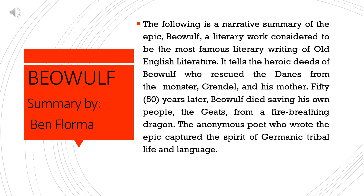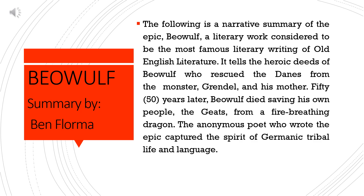Beowulf, Summary by Ben Plorma. The following is a narrative summary of the epic Beowulf, a literary work considered to be the most famous writing of Old English literature. It tells the heroic deeds of Beowulf, who rescued the Danes from the monster Grendel and his mother. Fifty years later, Beowulf died saving his own people, the Jeets, from a fire-breathing dragon. The anonymous poet who wrote the epic captured the spirit of Germanic tribal life and language.